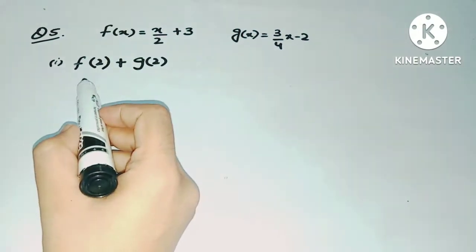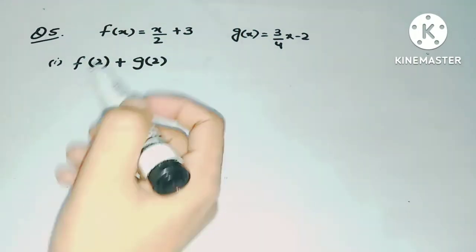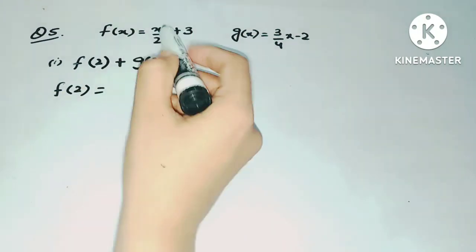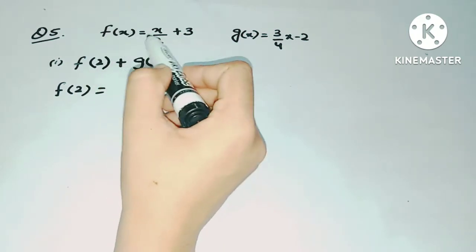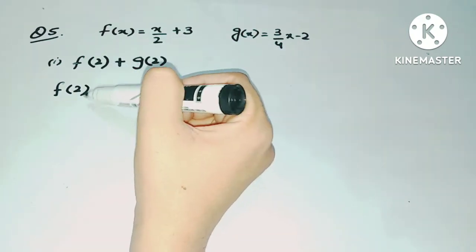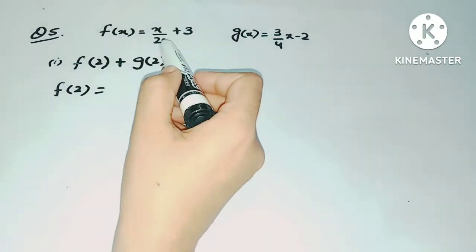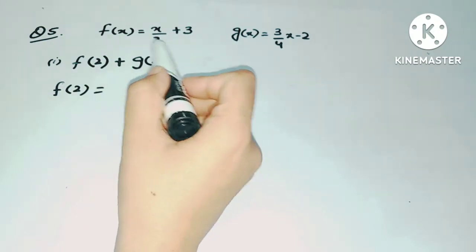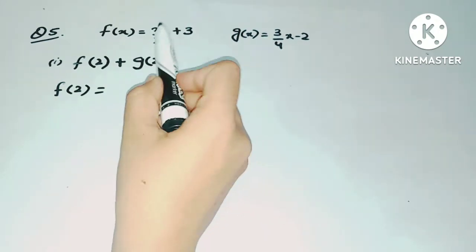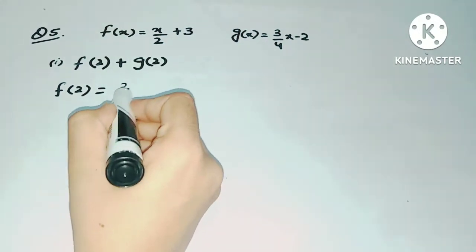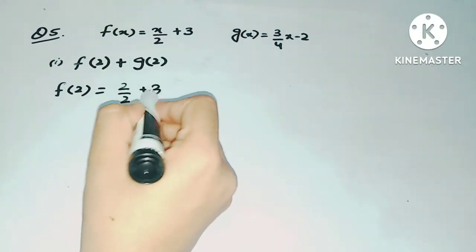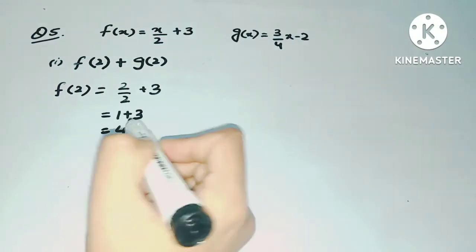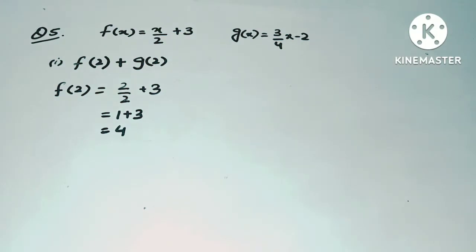First you have to find f(2), then g(2), and then add both values. To find f(2), take the f(x) function and substitute 2 in place of x. The function is x/2 + 3, so substituting gives 2/2 + 3. Two divided by 2 is 1, so 1 + 3 = 4. Therefore f(2) = 4.